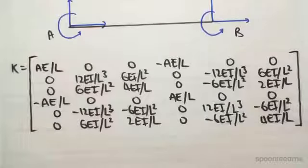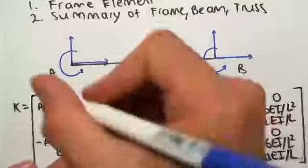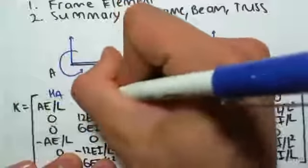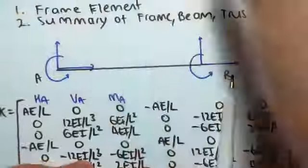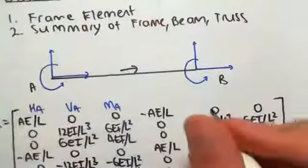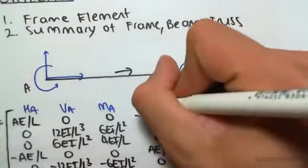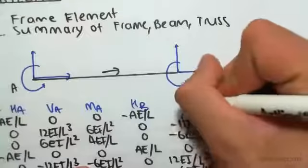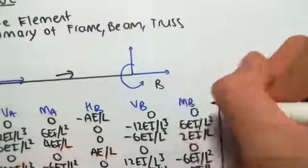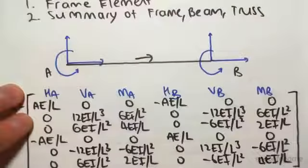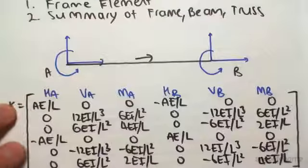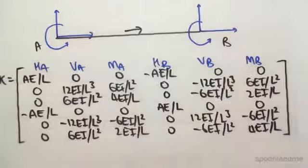We would have HA, VA, moment at A. Assuming that our location vector is going like that, this would be HB, VB, and MB, and it would be the same thing down the side here: HA, VA, MA, HB, VB, MB down the side.